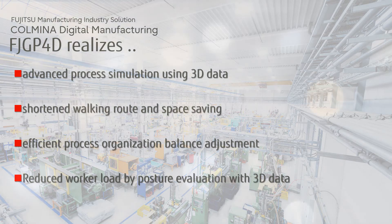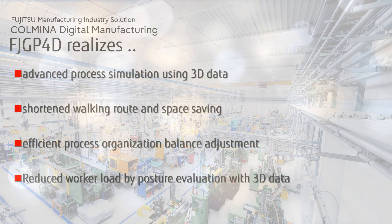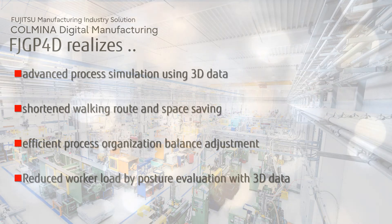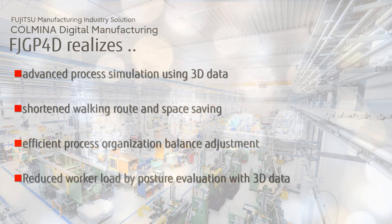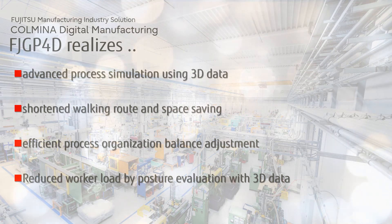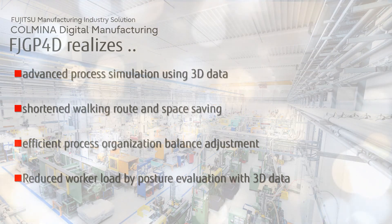FJGP4D enables highly accurate layout study that was previously only statically considered. By adding workers, equipment, product movements, and time, it is possible to study the process even before the actual line installation.